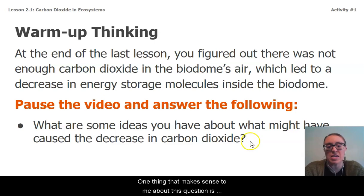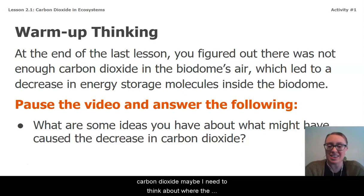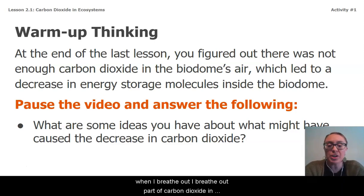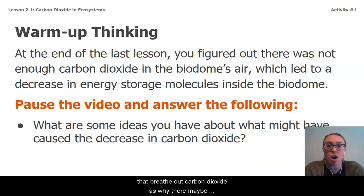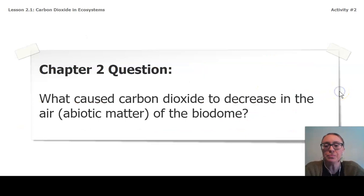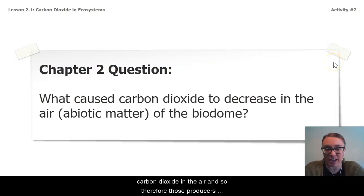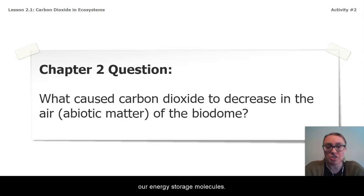One thing that makes sense to me about this question is: if I want to know what caused the decrease in carbon dioxide, maybe I need to think about where the carbon dioxide comes from. I know that as a human, when I breathe out, I breathe out carbon dioxide. So maybe there's some connection between the people or other animals that breathe out carbon dioxide and why there maybe wasn't enough in the atmosphere of the biodome. Last chapter, we realized there wasn't enough carbon dioxide in the air, and so those producers didn't have enough carbon to make energy storage molecules, and therefore our plants and animals didn't have the energy they needed to survive.